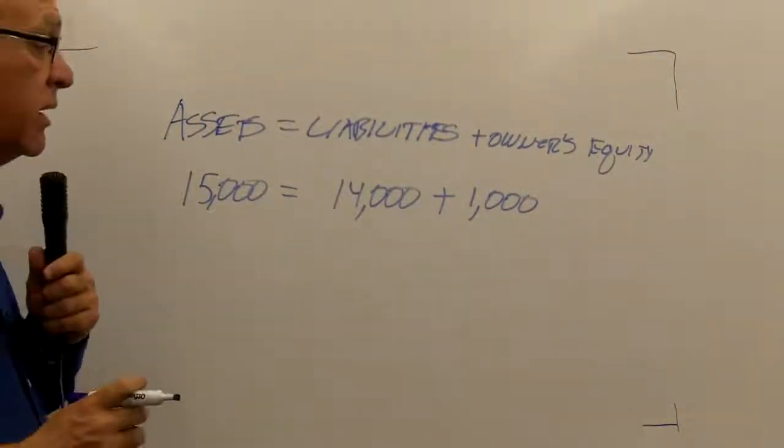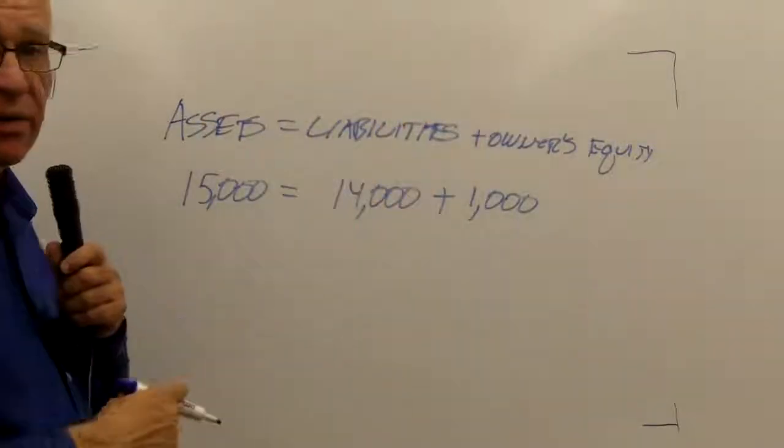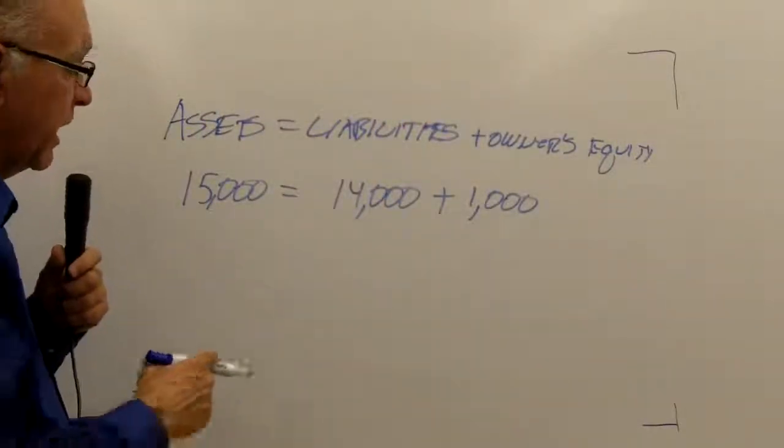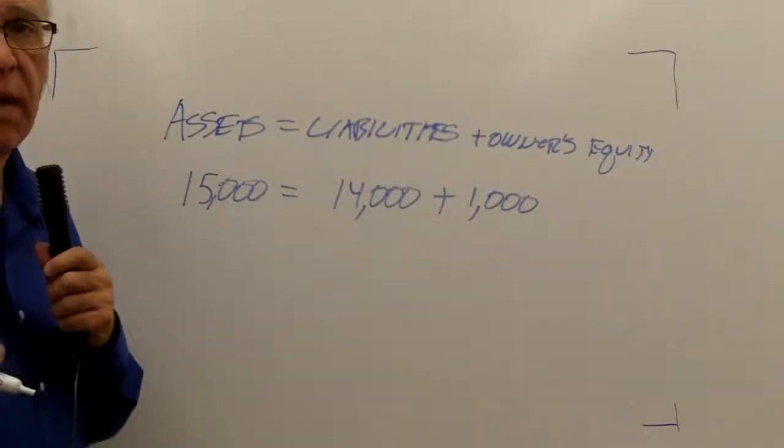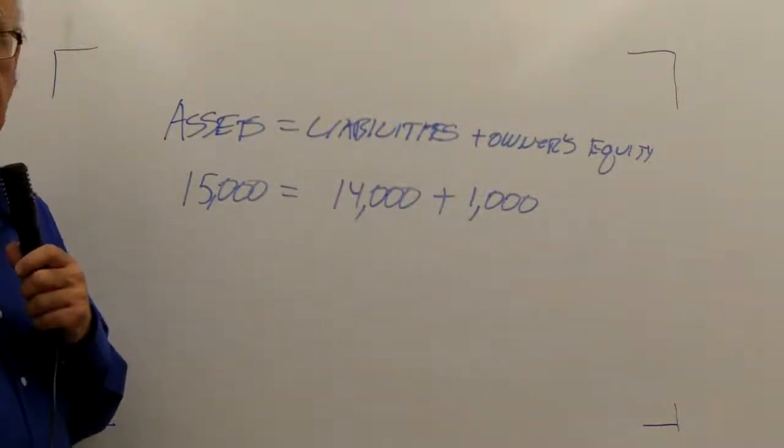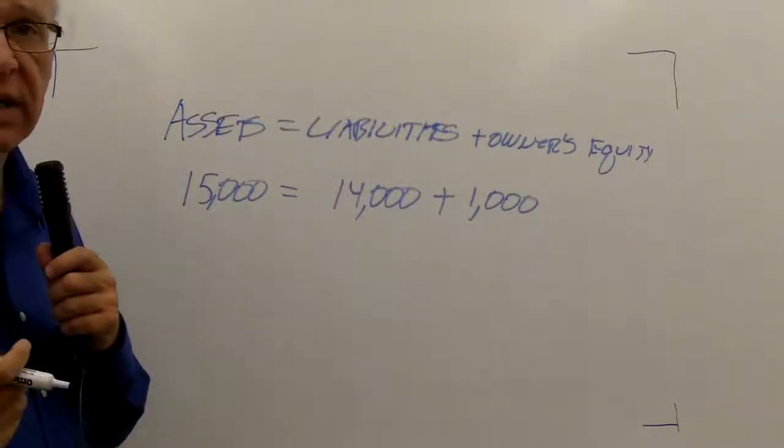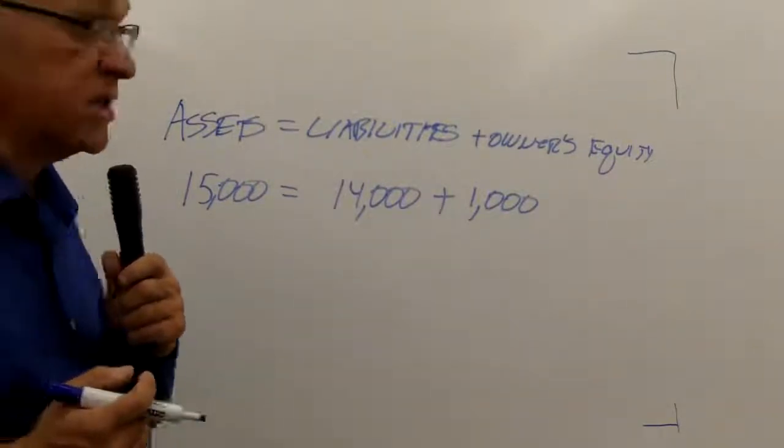If I were to just use these categories, yes I could show my total assets, my total liabilities, and my total owner's equity. But so that I can manage a company or manage my finances, I would want to break that down to different accounts.